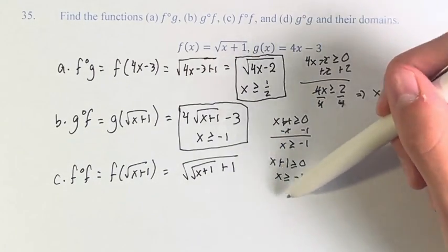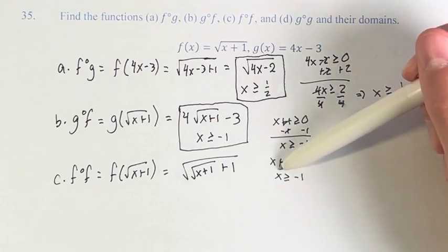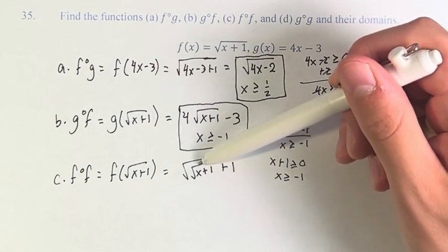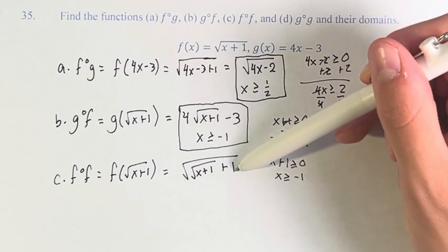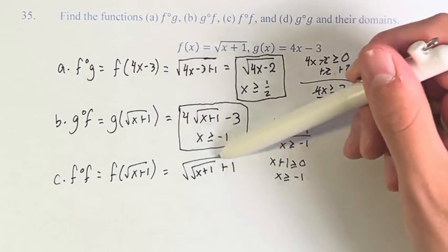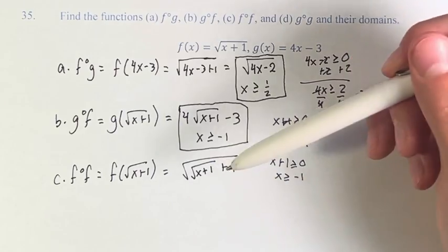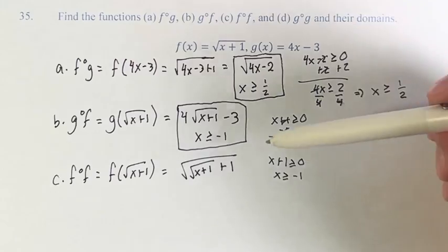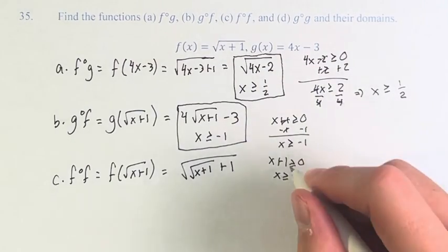However, given that we're not inputting some invalid value, for any value that satisfies this, the square root of this number is going to be positive. Therefore, we have a positive number plus 1, so the whole thing inside the square root is never going to be negative. It's either going to be invalid for a number we can't have, or it's going to be positive. Therefore, this is the only restriction.